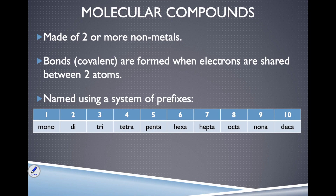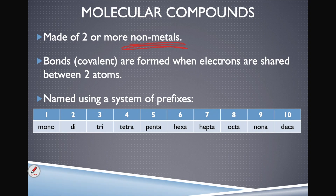Molecular compounds are made of two or more non-metals, which means we are looking at only the right-hand side of the periodic table — elements to the right of the staircase are non-metals. These molecular compounds are formed by a covalent bond, which happens when electrons are shared between two atoms. Compare this to how the bond is formed in an ionic compound. Molecular compounds are named using a system of prefixes.